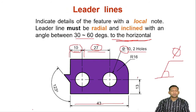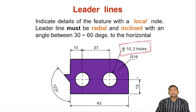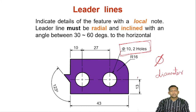One more type of line is the leader line. The leader line is used to write a note. For example, a note like '2 holes, diameter 10mm' — in engineering drawing, the symbol phi (Φ) is used to represent diameter. The note represents that the object has two holes. This is called a note, and for writing such notes we use the leader line.